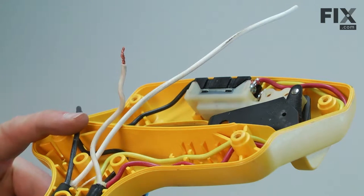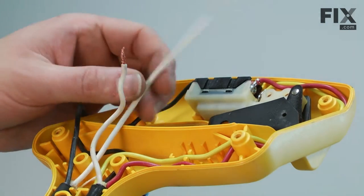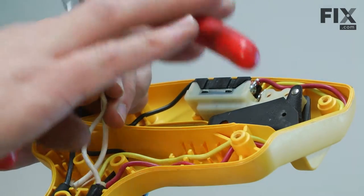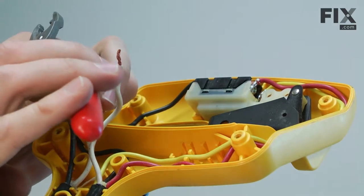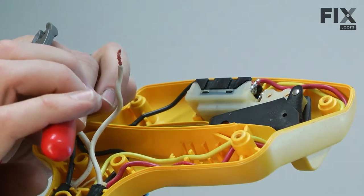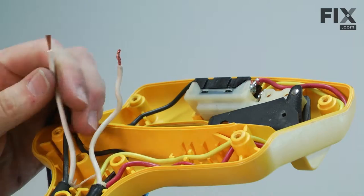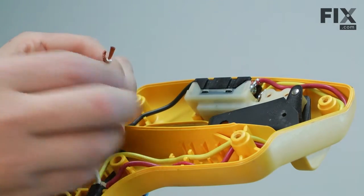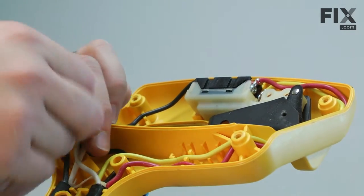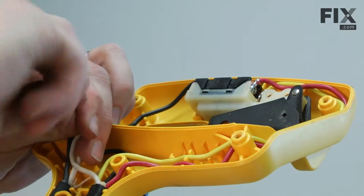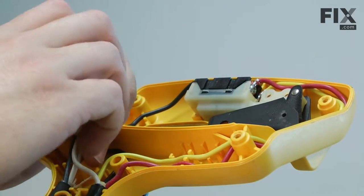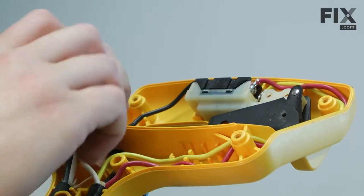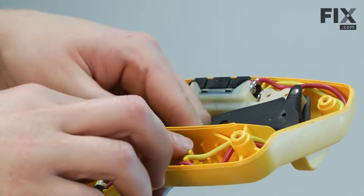Now, we can go ahead and rewire things in the handle. I'll start with the white wire. First, I need to cut it to length, and then I'll strip the end, and reattach the two white wires with a wire nut, and tuck that back down into the handle.